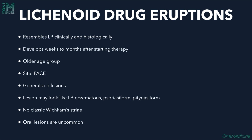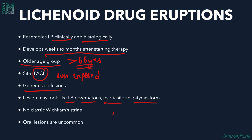Coming to lichenoid drug eruptions — these resemble lichen planus clinically and histologically. They develop weeks to months after starting therapy, and mostly the older age group (commonly more than 66 years) is affected. The most common site is the face; sun-exposed areas are affected. Lesions may look like lichen planus, or they may be eczematous, psoriasiform, or pitriaciform. The classical Wickham's striae seen in lichen planus is absent here, and oral lesions are also very uncommon.